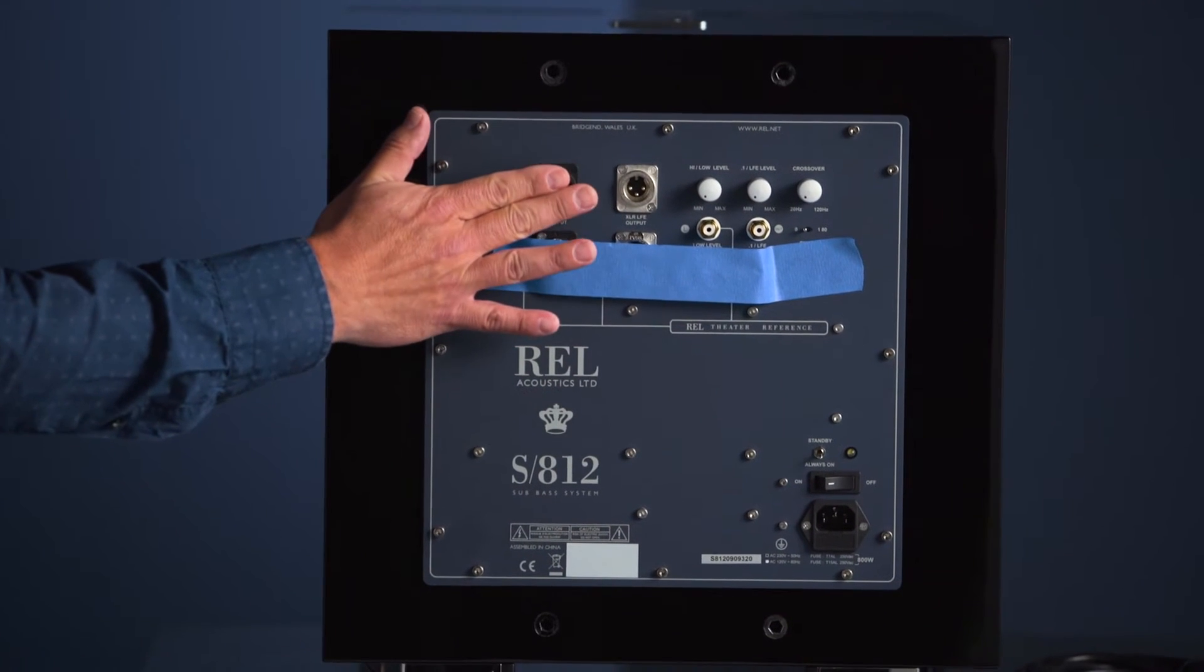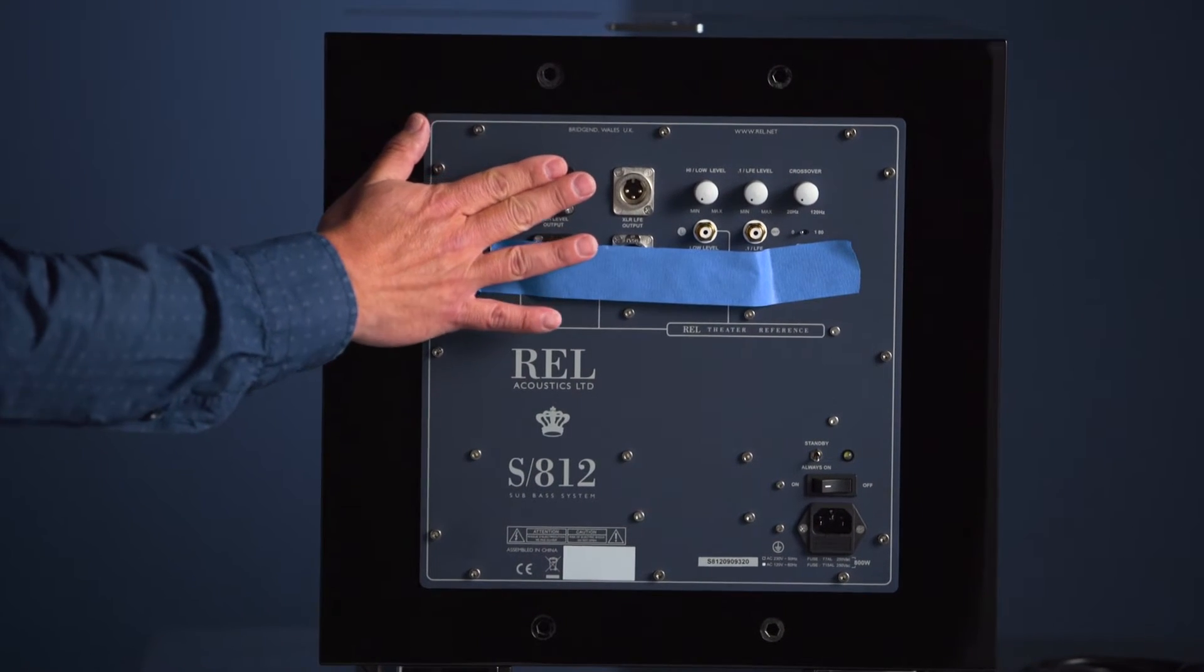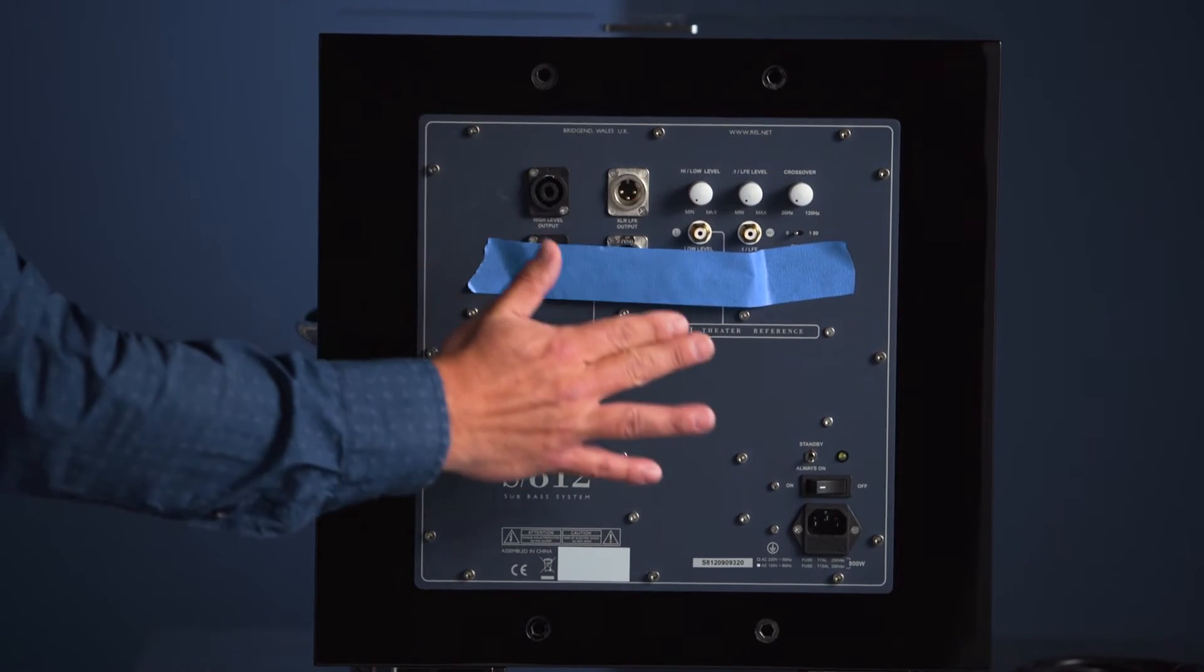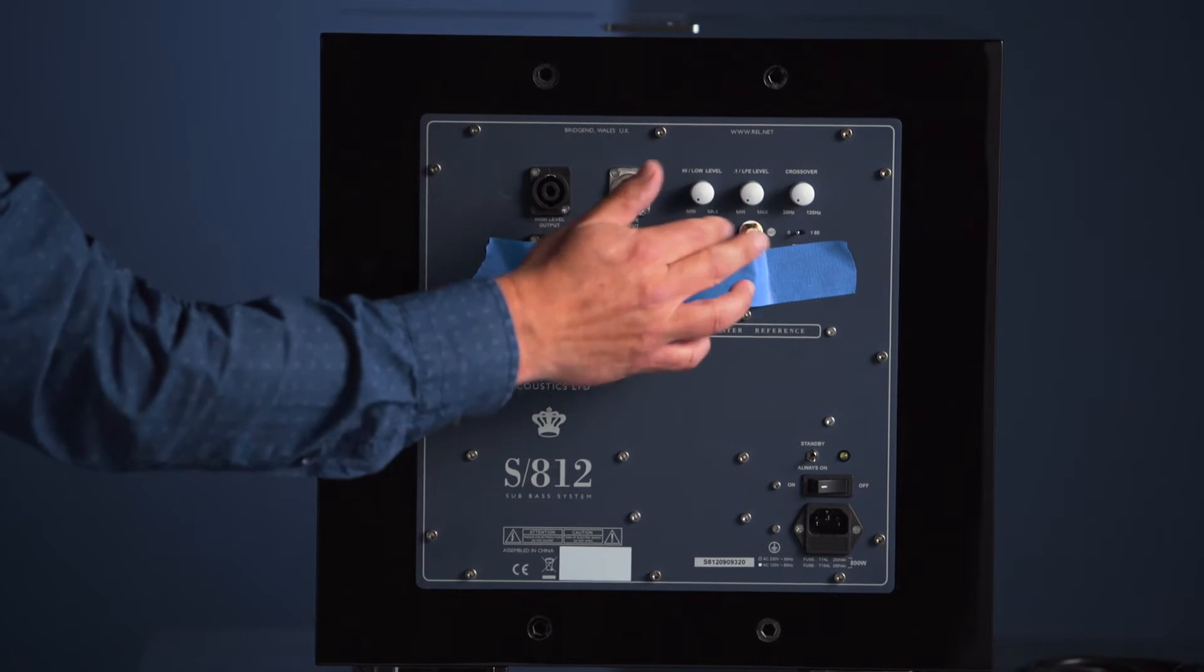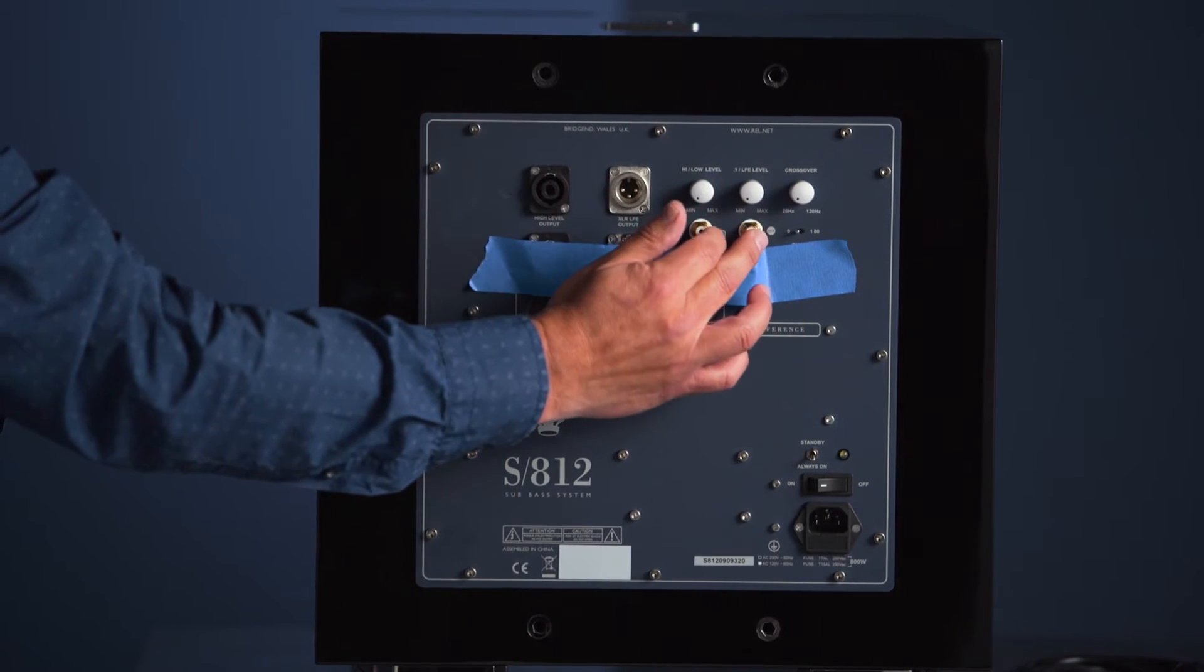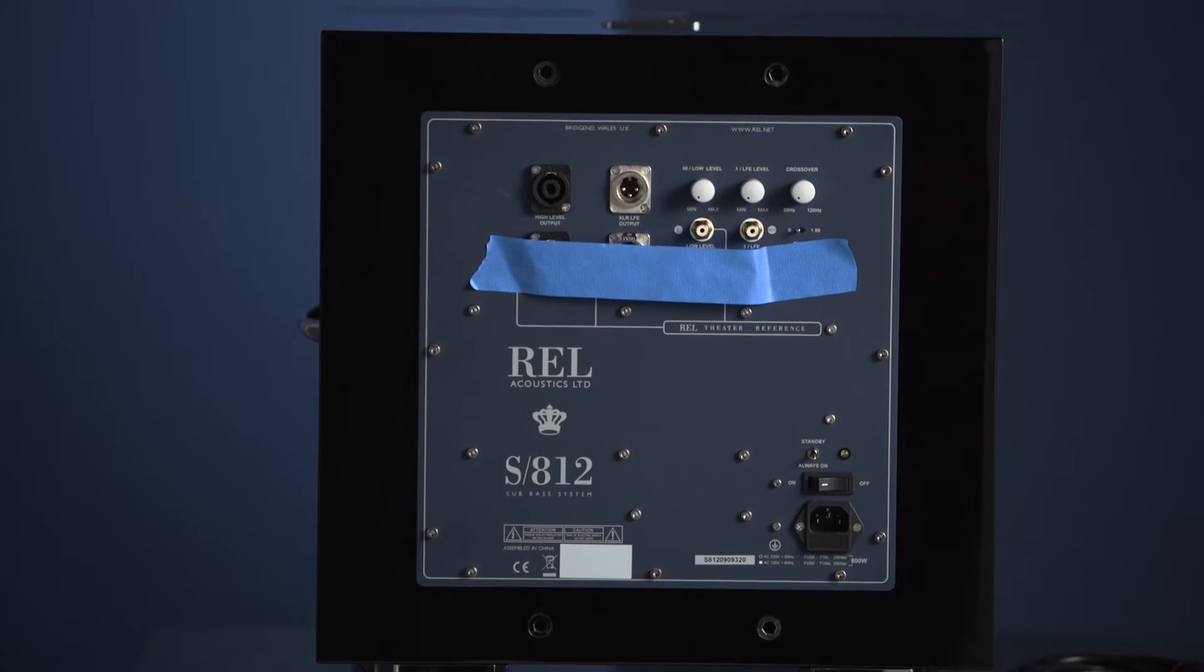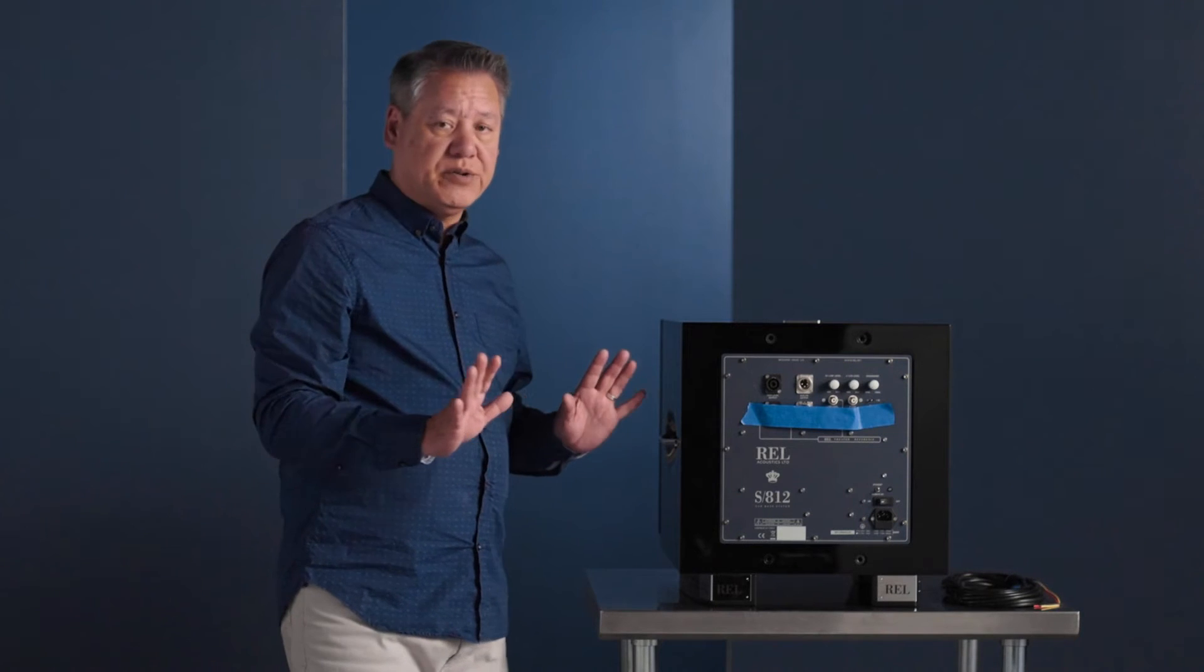You have a high level speakon connection input, come back to that in just a moment. You have XLR 0.1 input, and you have both stereo inputs. So there's one extra one down here, but I'm doing it for simplicity's sake. Stereo low level input and an RCA 0.1. That's really all there is to it.